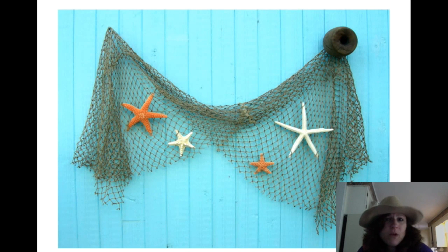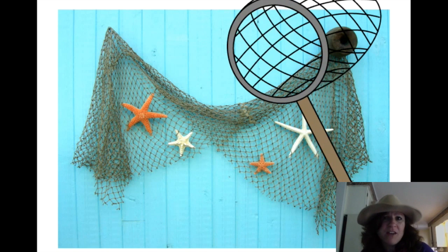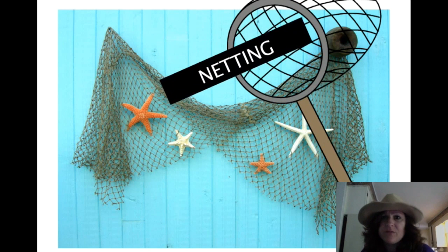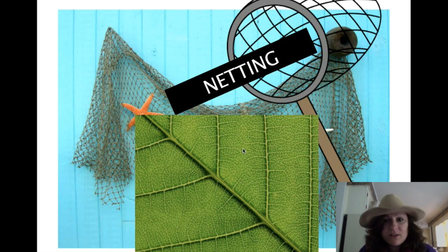Netting. What does netting have to do with leaf morphology? Well, there's a term called netting, and it applies to leaves. Check this out right here — do you see this leaf part in the center of these veins? That's called the netting of a leaf.